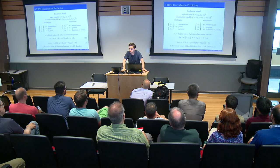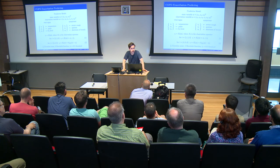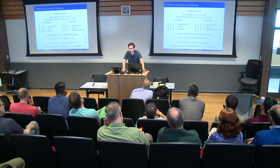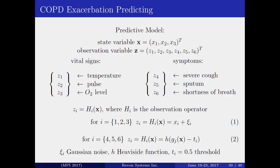Our subgroup worked on predictive models. The idea is that RIVON's system wants to predict whether an exacerbation happens. An exacerbation is defined as exhibiting two symptoms for two consecutive days. We wanted to predict that based on vital signs. We hypothesize a functional relationship and see if we can make predictions. The vital signs include temperature, pulse, heart rate, and oxygen saturation.